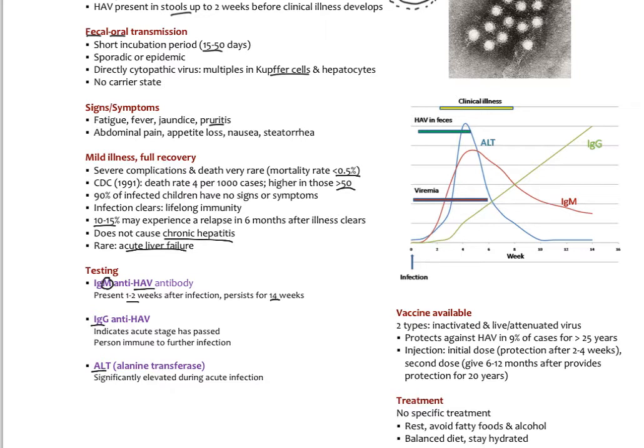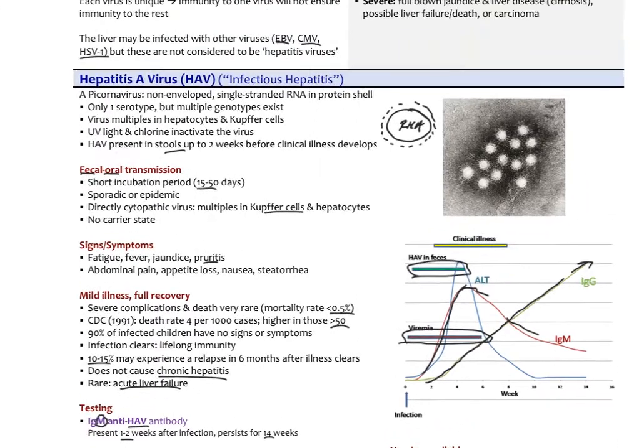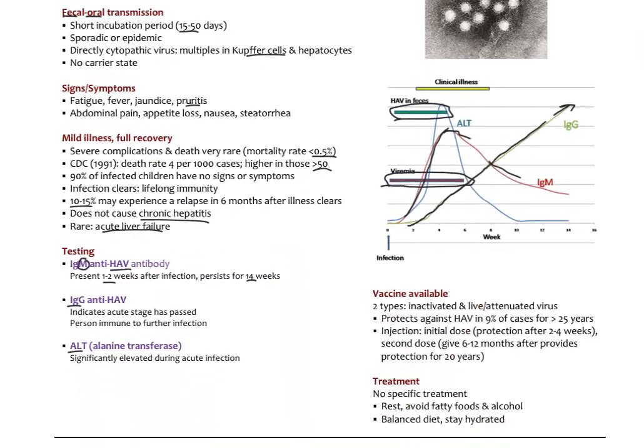IgG anti-HAV indicates that the acute stage has passed or that you're immune to further infection. We check our liver enzymes, especially ALT that could be significantly elevated. You see in the picture here, the IgM peaks about a month and then it goes down. IgG after the month starts to go up, meaning you have immunity. We can see HAV in the feces at the beginning. Viremia, we can detect viral particles in the blood up to about six weeks. After about six weeks, most people have basically recovered.